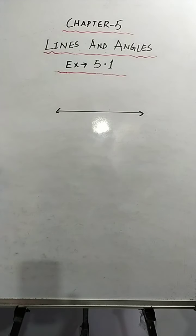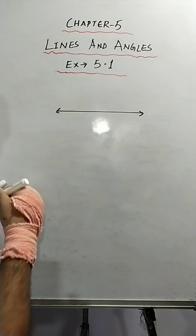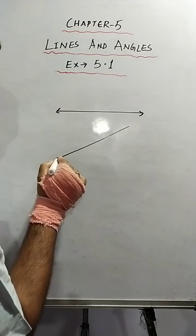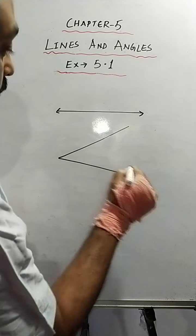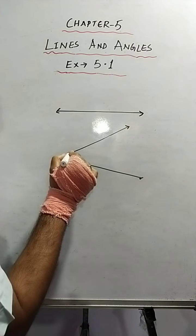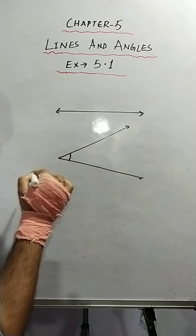So what is an angle then? Any angle is formed when two lines intersect each other — something like this. Suppose two lines are there; when two lines intersect, then an angle is formed. So this is what an angle is.